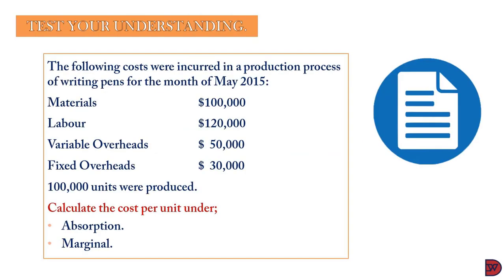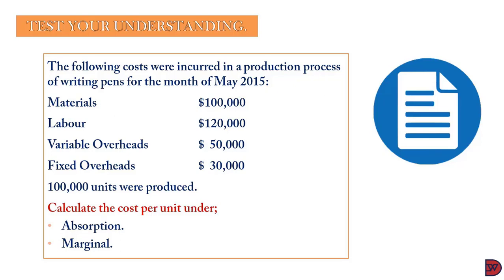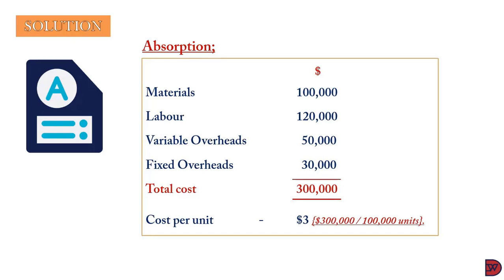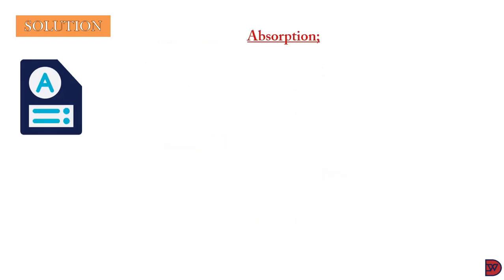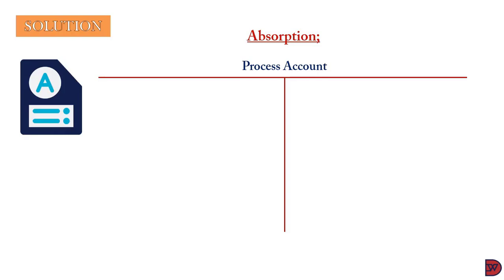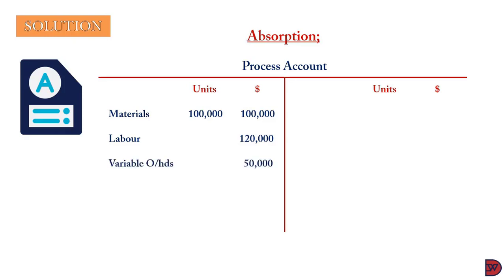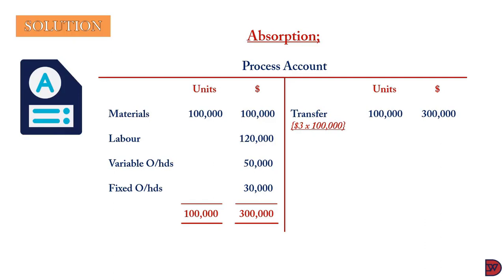We'll use the earlier question solved under absorption and marginal costing. Under absorption costing, the total cost was $300,000 and the cost per unit was $3. When we open the T-account, we debit the input costs: materials — 100,000 units at $100,000; labour $120,000; variable overheads $50,000; fixed overhead $30,000. The total input is 100,000 units at a cost of $300,000. We then credit the transfer: 100,000 units at $3 per unit, giving $300,000. Both sides agree.